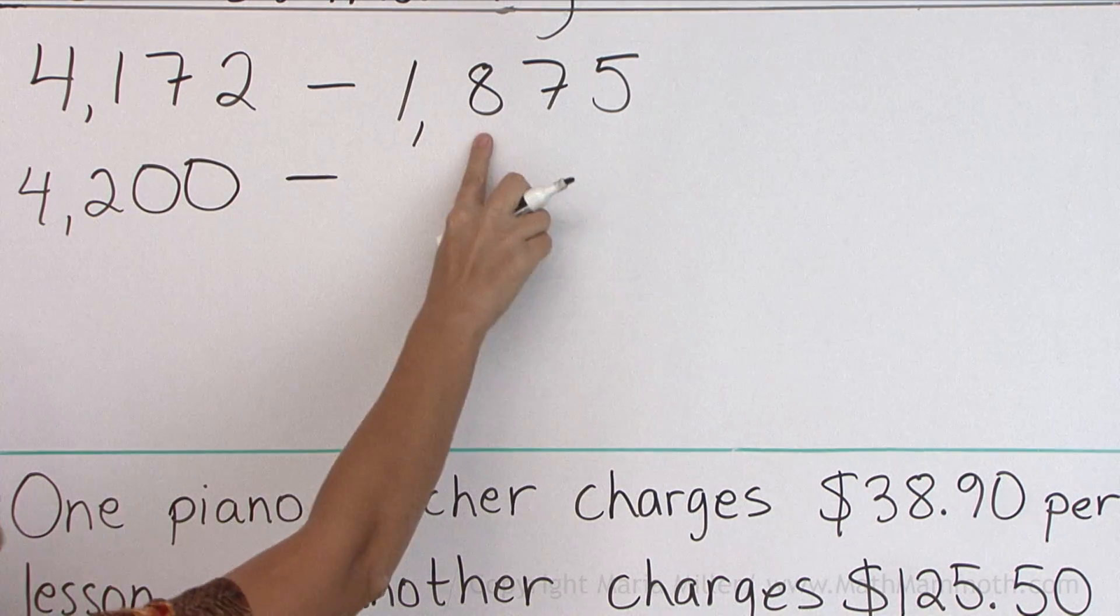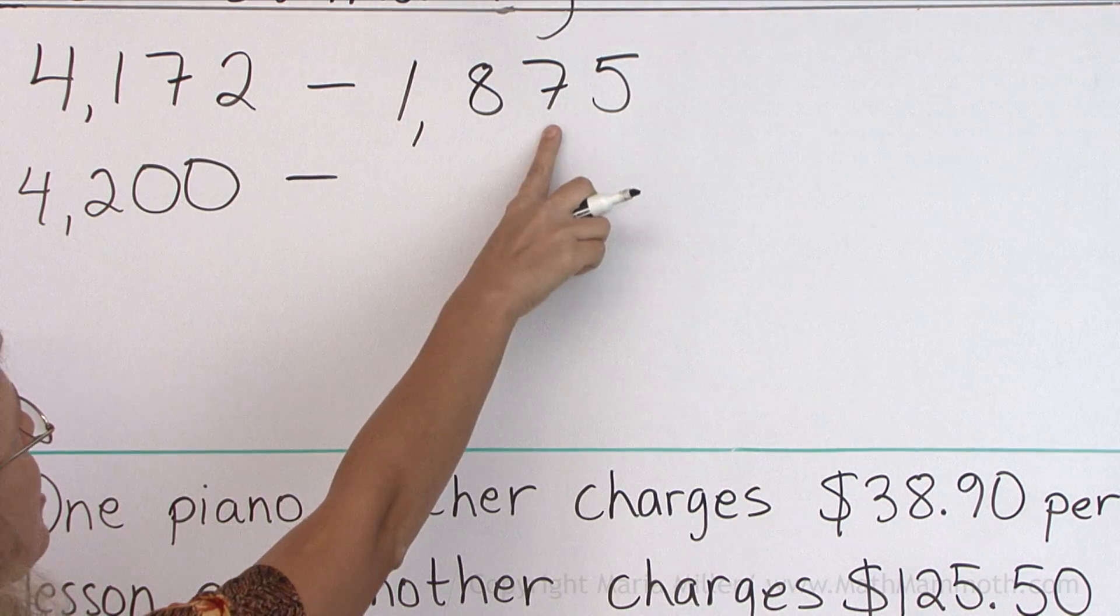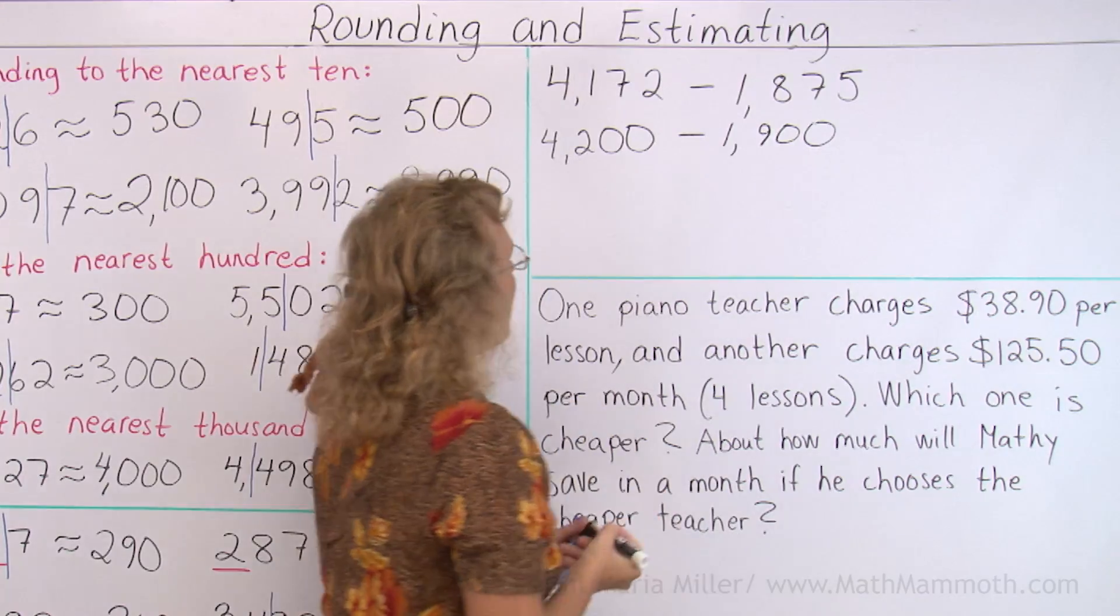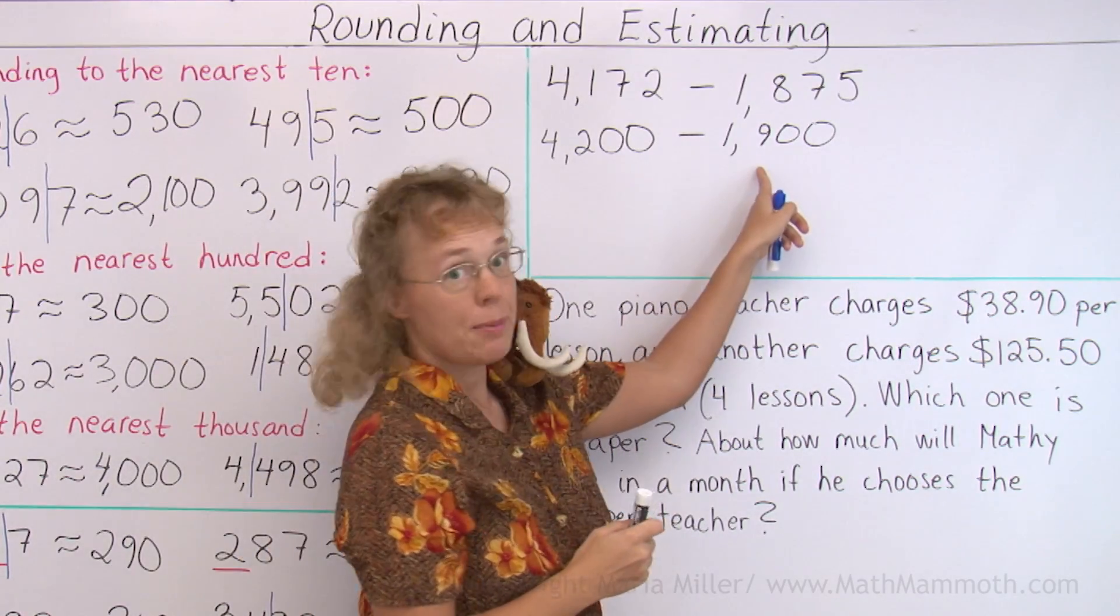And over here, here's the hundred's digit, this means I round up, so I get one thousand, nine hundred. And now, to subtract this mentally.